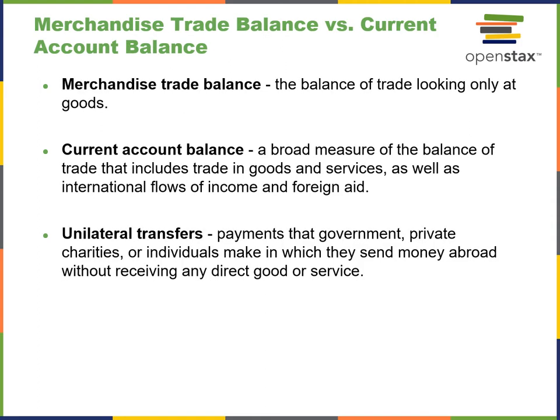Merchandise trade balance versus current account balance — these are three key definitions. The merchandise trade balance, or balance of trade, looks only at the exchange of goods. The current account balance is a broader measure that includes trade in goods and services, international flows of income, and foreign aid. Unilateral transfers are payments — like government aid, private charities, or individual remittances — sent abroad without any expectation of a return.